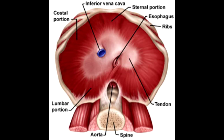What is the mnemonic to help you remember that these three things perforate the diaphragm at the level of T12? Just remember the rhyme: at T12, it's red, white, and blue. Red for the aorta, white for the thoracic duct, and blue for the azygous vein.